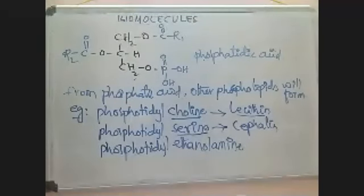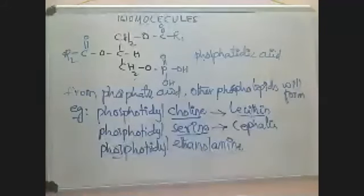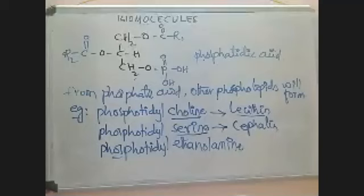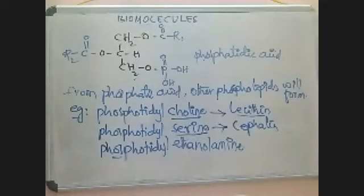Another derivative is phosphatidylethanolamine. This means one ethanolamine compound is bound with phosphatidic acid, and then it is called phosphatidylethanolamine.